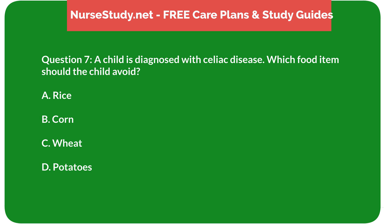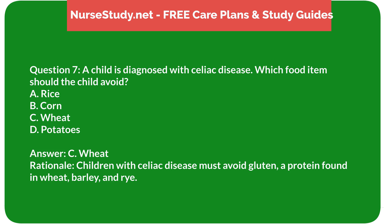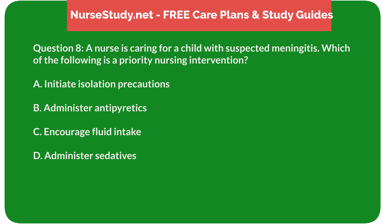Question 7: A child is diagnosed with celiac disease. Which food item should the child avoid? A) rice, B) corn, C) wheat, D) potatoes. Answer: C) wheat. Rationale: Children with celiac disease must avoid gluten, a protein found in wheat, barley, and rye.